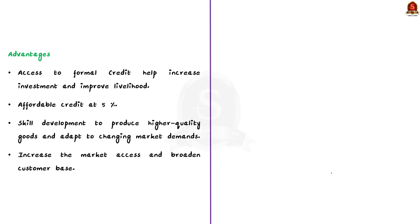The first main advantage is access to credit. Currently, traditional artisans face the challenge of access to formal credit. The scheme addresses this issue by providing affordable loans, enabling artisans to make investments in their trade and improve their livelihoods. The second main advantage is affordable credit — the scheme provides credit at a concessional interest rate of 5%, helping artisans avoid the burden of high interest debt from informal money lenders.